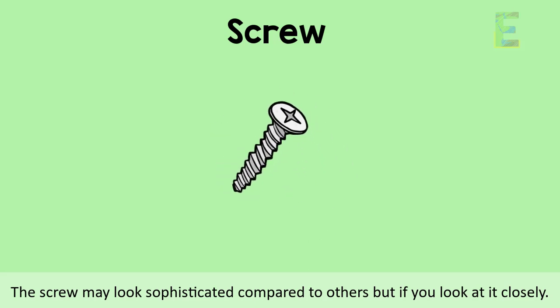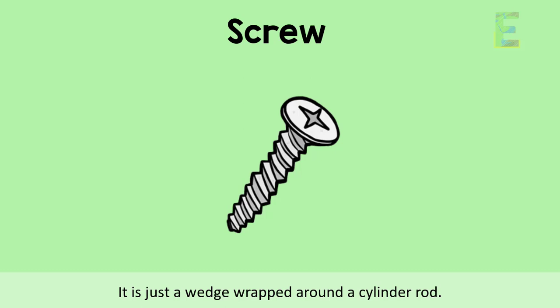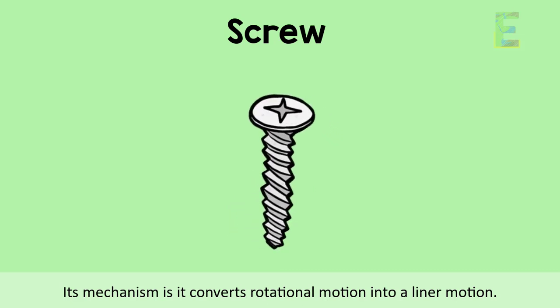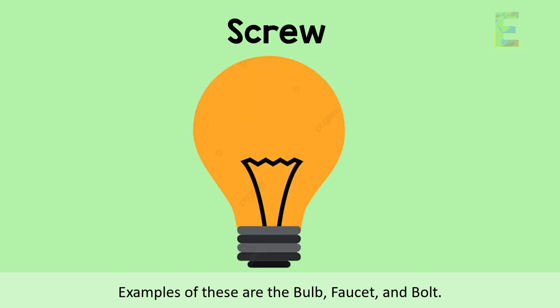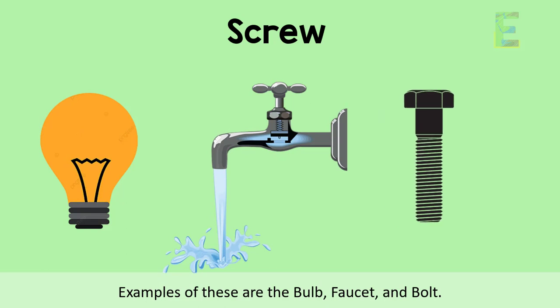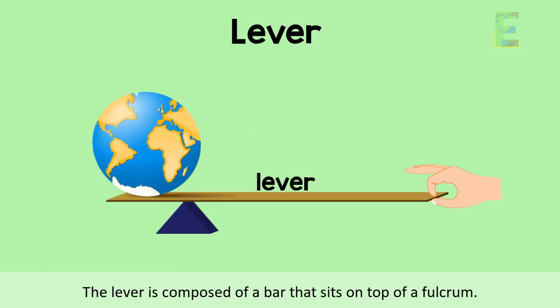The fifth one is the screw. The screw may look sophisticated compared to others, but if you look at it closely, it is just a wedge wrapped around a cylinder rod. Its mechanism is it converts rotational motion into linear motion. Examples of this are the faucet and bulb.